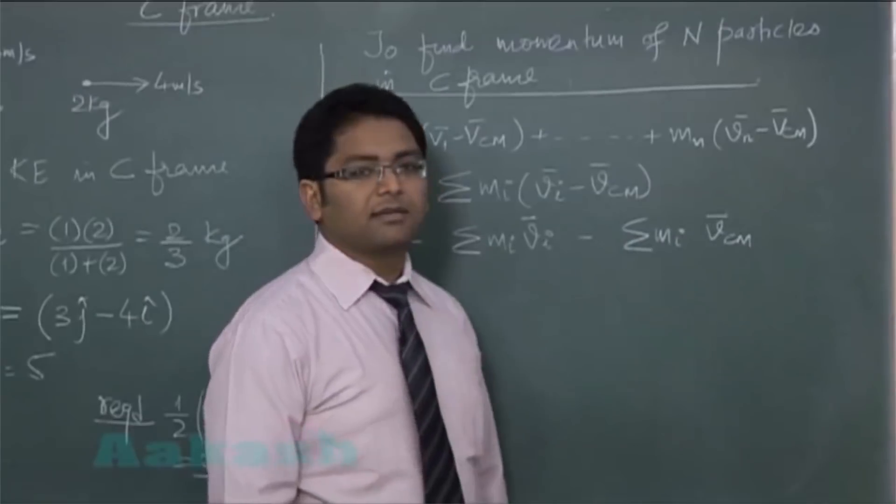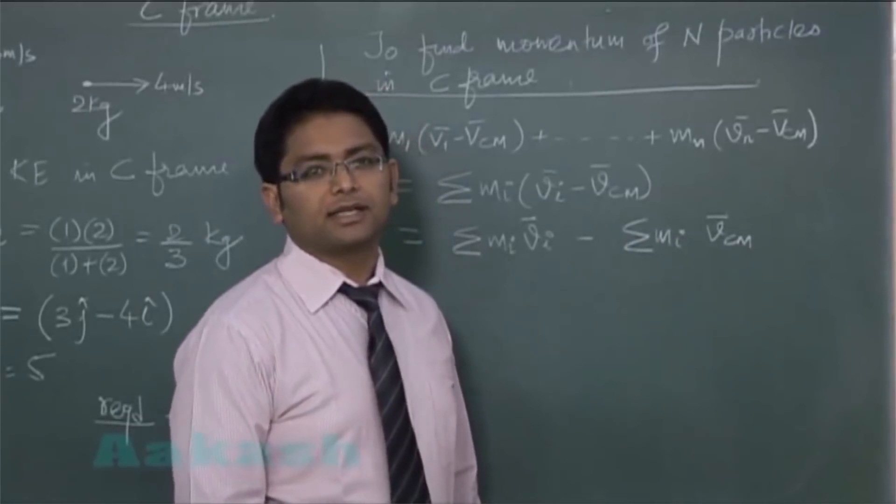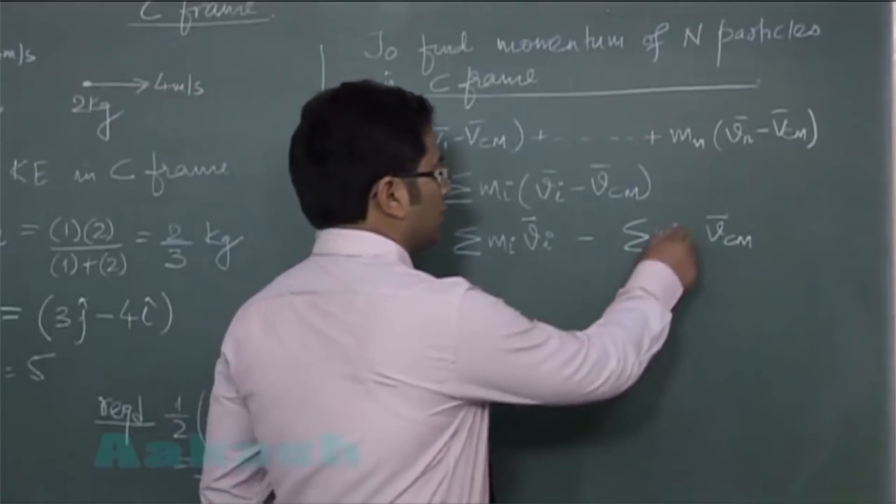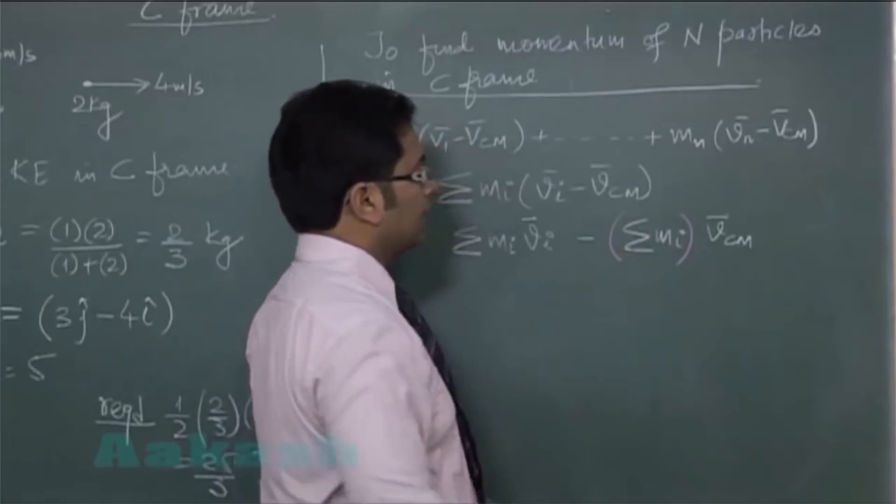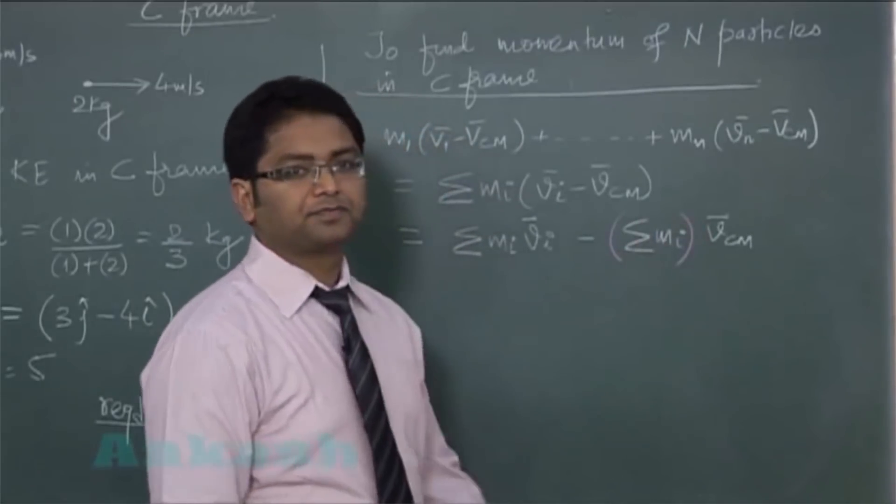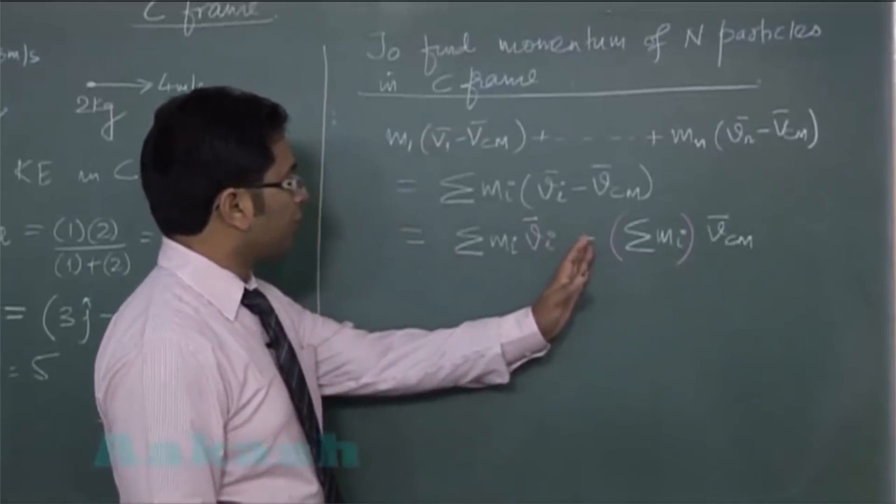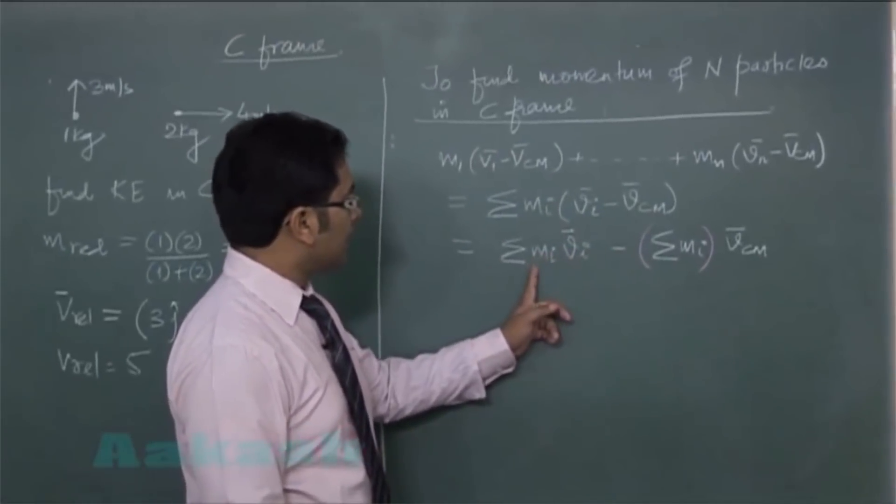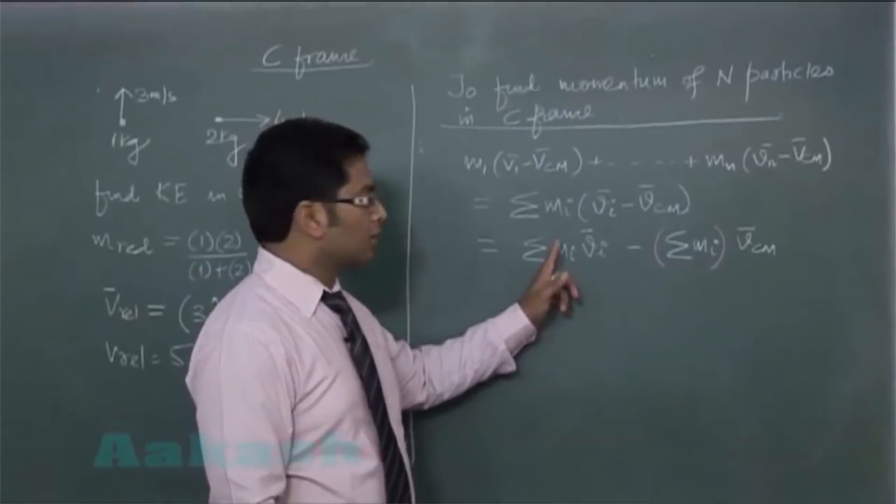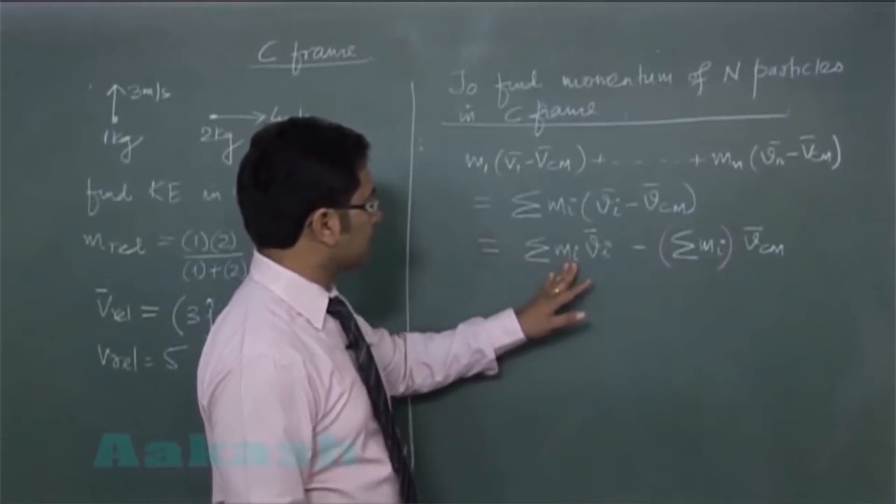And all of us know VCM is constant for a given N particle system, so you can take this thing different. Whereas VI cannot be brought outside because VI is a function of I, and the whole summation or whole integration is with respect to I.